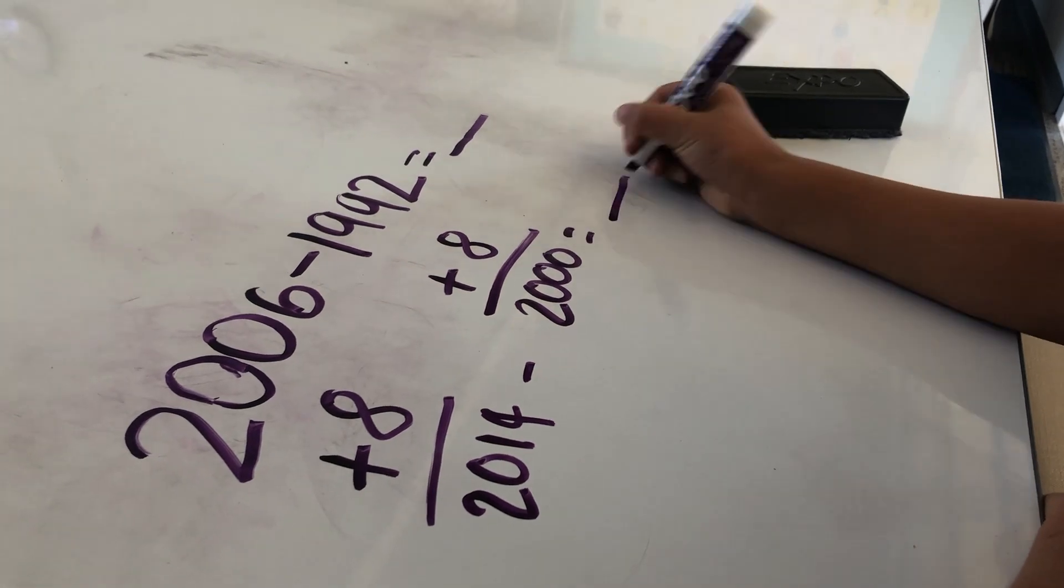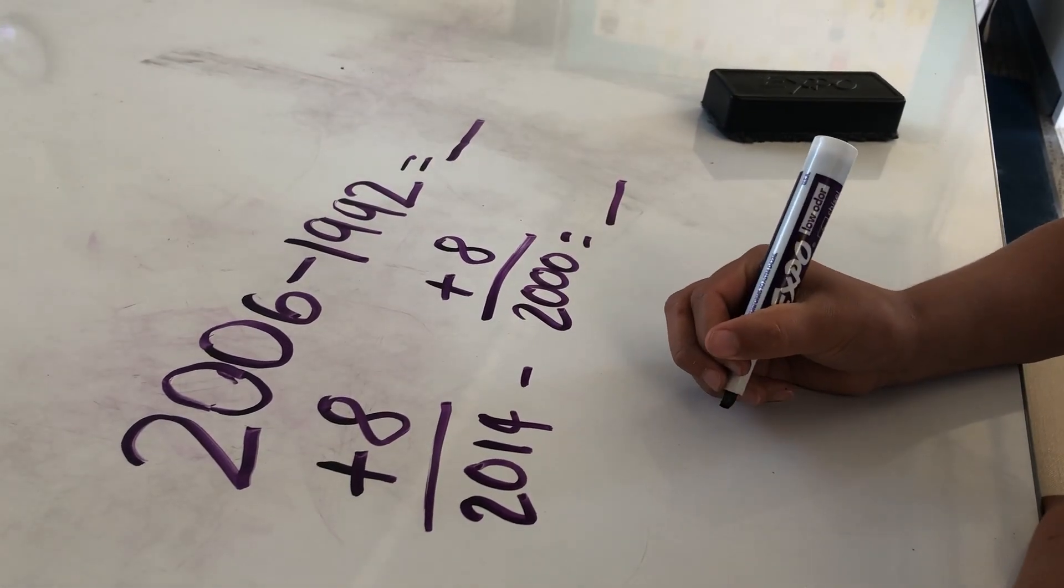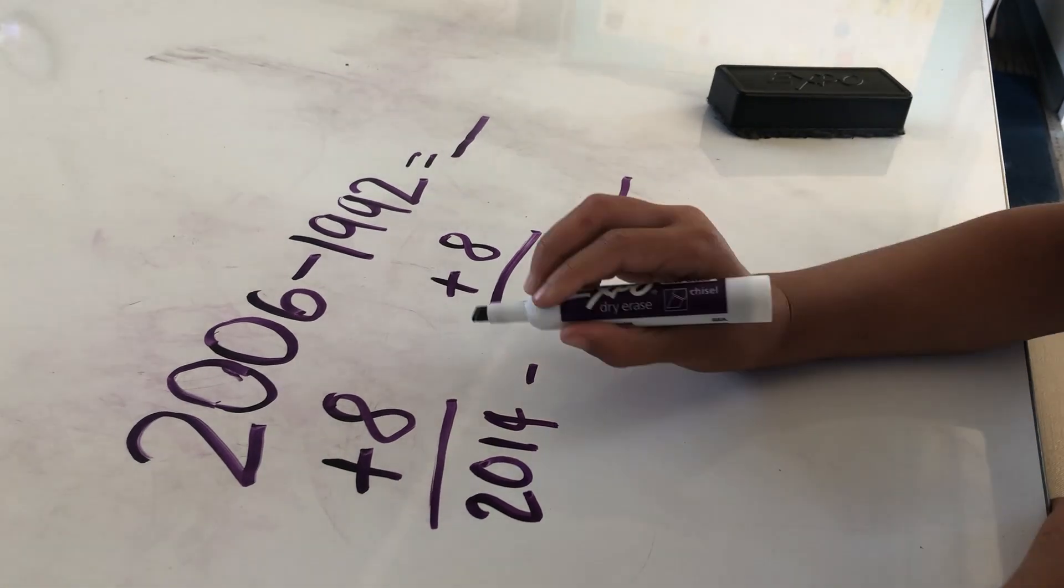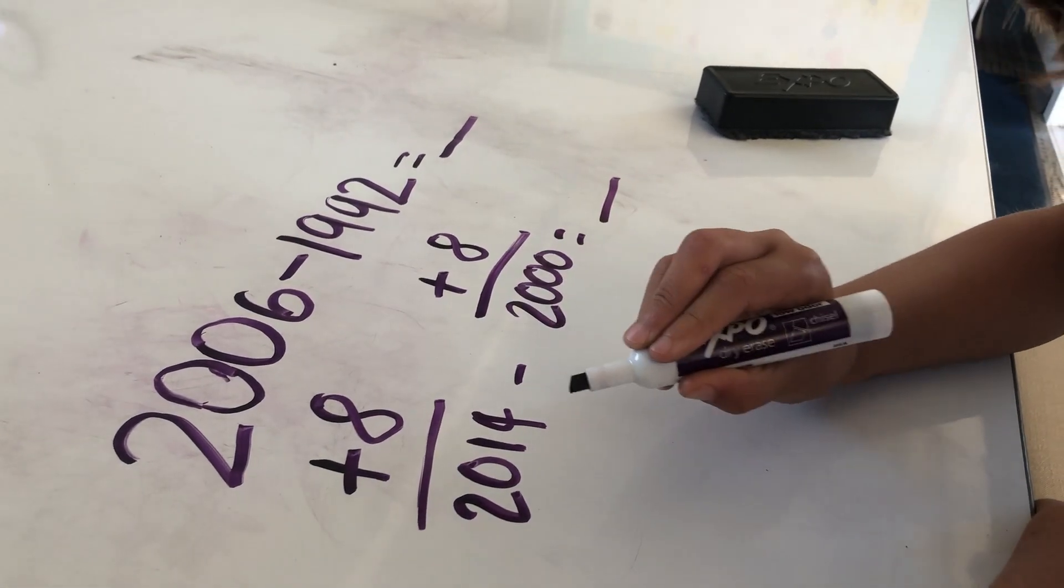This strategy I'm using is called constant difference. So if I add the same number, it keeps the difference the same.